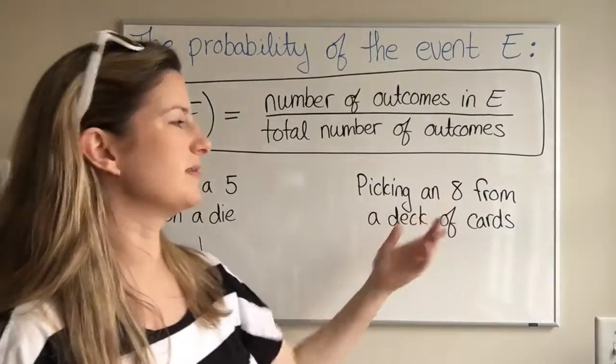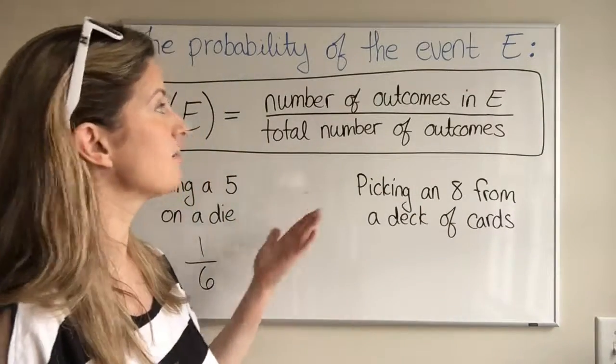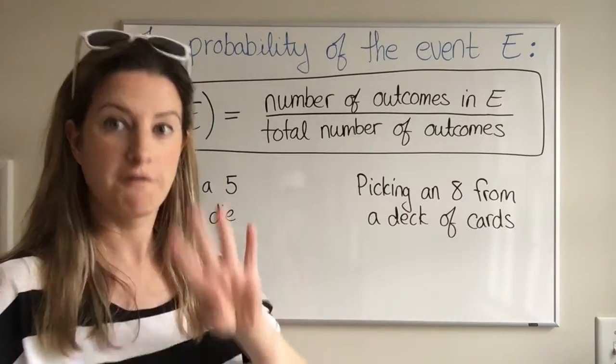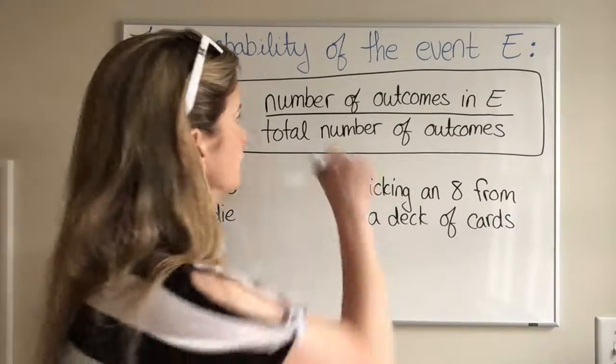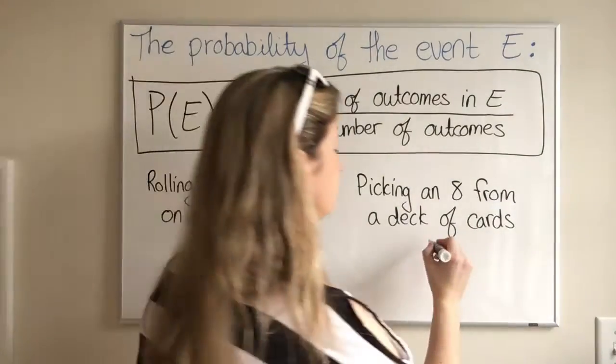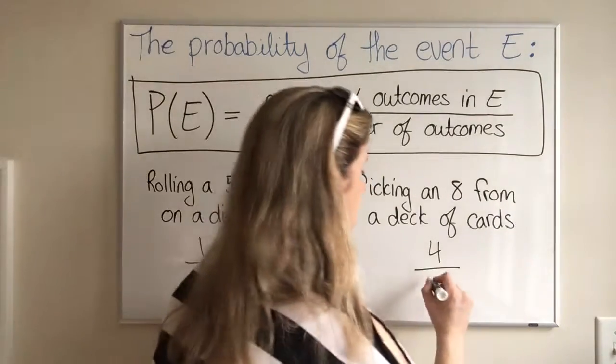What about picking an 8 from a deck of cards? We're going to intuitively do this the same way. Number of outcomes in E—if you think about a deck of cards, there are four 8s. So the number of outcomes in E, the event being picking an 8, is 4. A deck of cards has 52 cards.